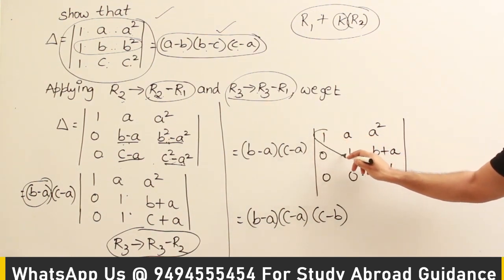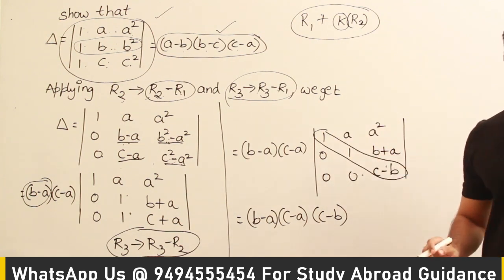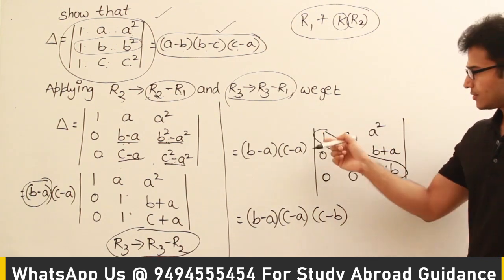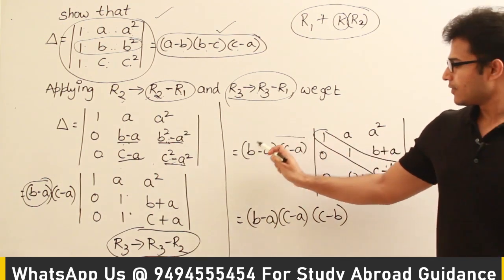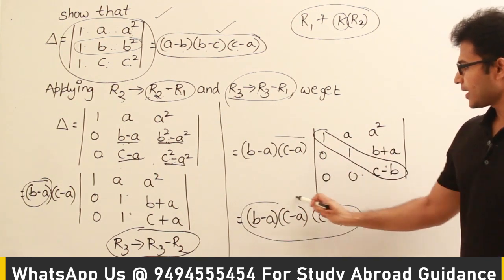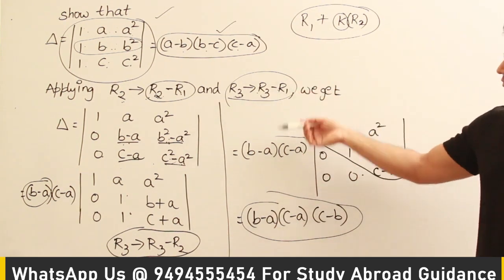And now we know that this is an upper triangular matrix, and in an upper triangular matrix the determinant is equal to product of the diagonal elements, and the product of the diagonal elements is nothing but c minus a. Therefore this is the answer.